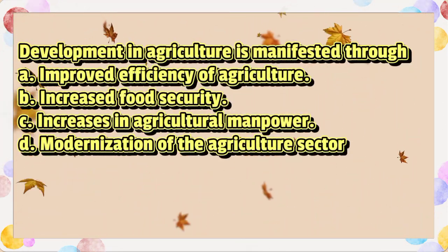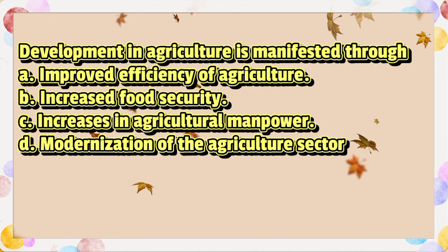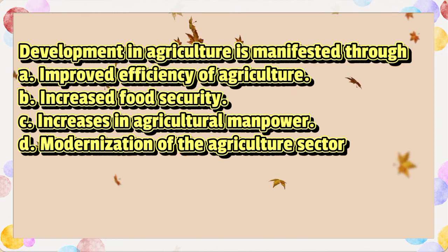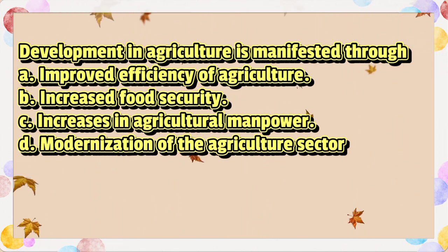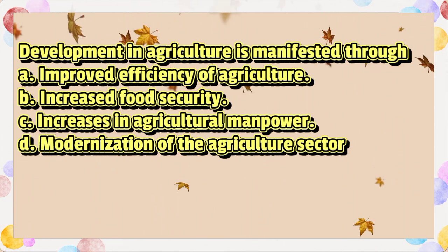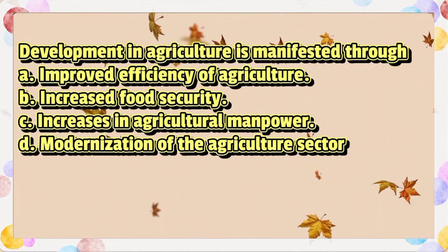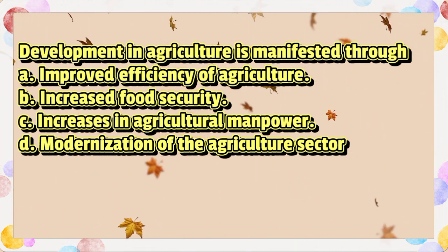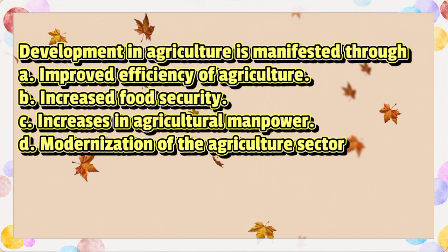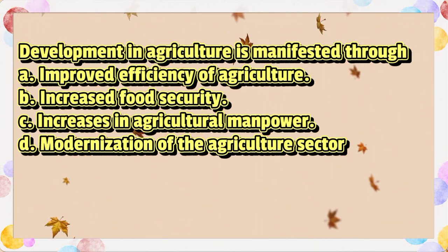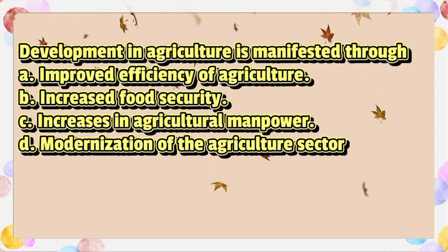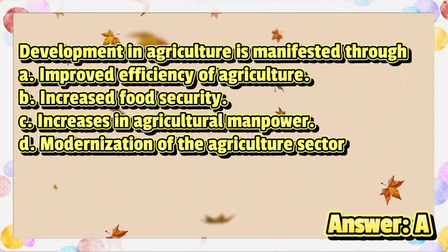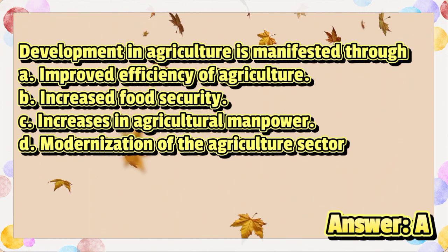Development in agriculture is manifested through: A. Improved efficiency of agriculture. B. Increased food security. C. Increases in agricultural manpower. D. Modernization of the agriculture sector. The answer is letter A.